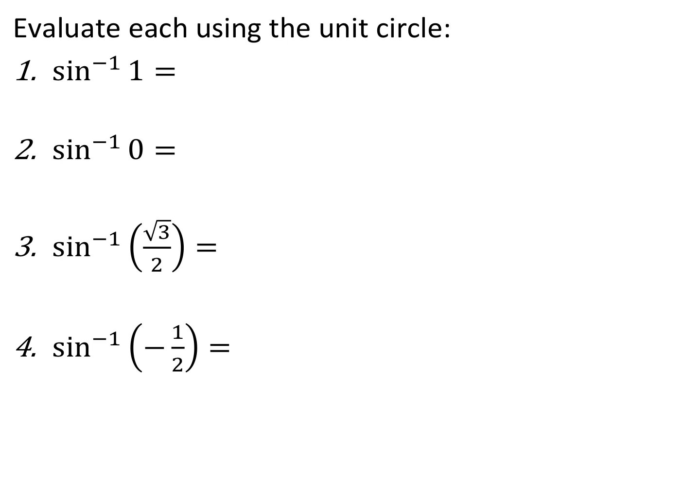We can use the unit circle to evaluate inverse trig ratios when the ratio is on our unit circle. For the first example, we have sine inverse of 1. The output of an inverse trig function is an angle measurement. I like to switch forms and think of this in terms of regular trig: this question is asking, the sine of what angle equals 1, but only in quadrants 1 or 4. On the unit circle, sine equals 1 at the top, so the angle is pi over 2. Therefore, sine inverse of 1 equals pi over 2.